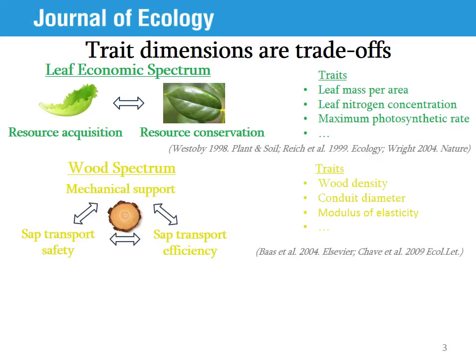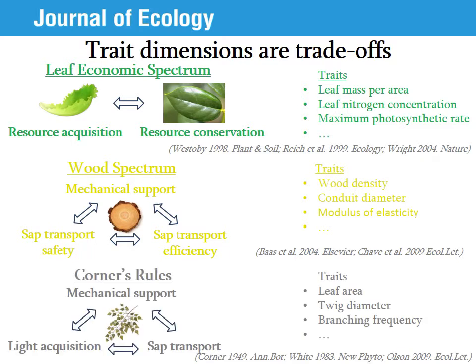Second, the wood spectrum describes a three-way trade-off between three conflicting functions: mechanical support, sap transport efficiency, and sap transport safety. Some of the traits associated with this dimension are, for example, wood density, conduit diameter, and modulus of elasticity.